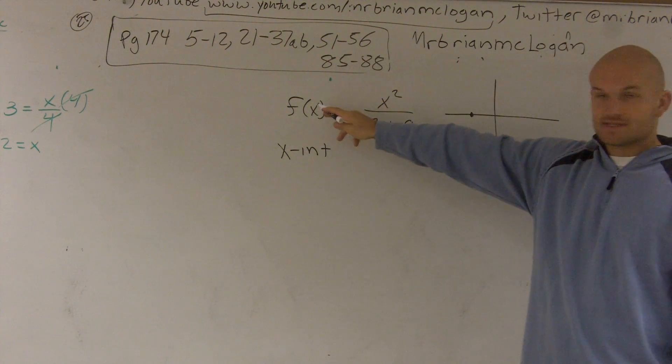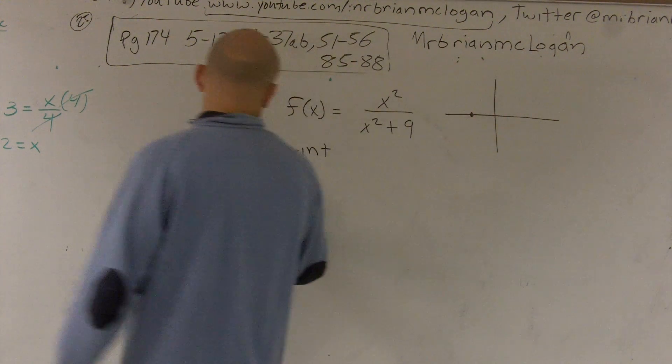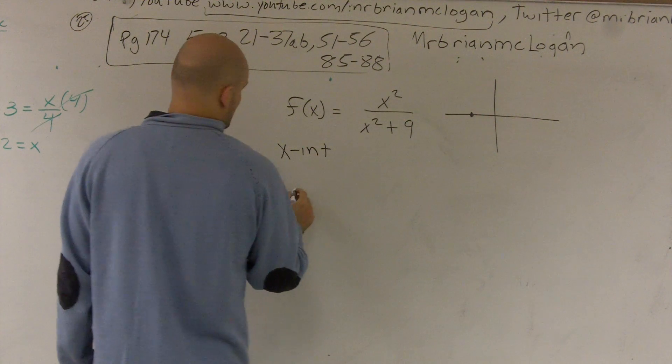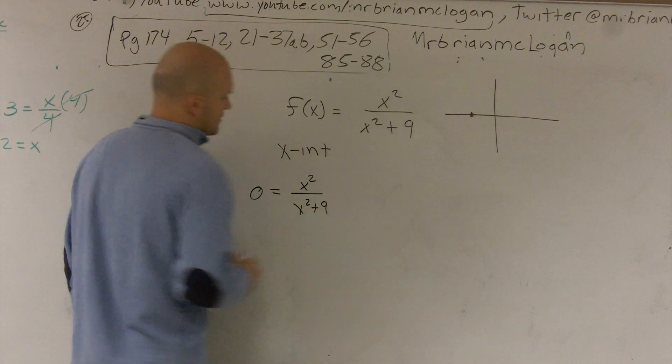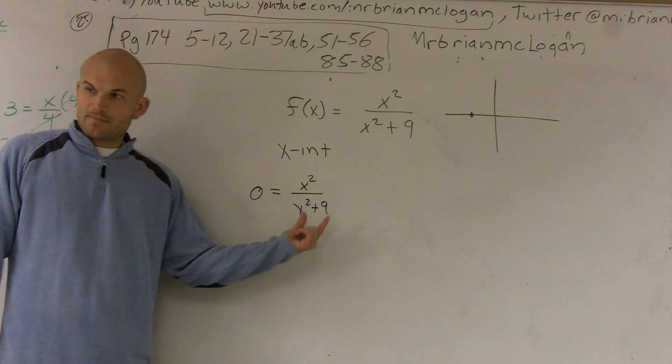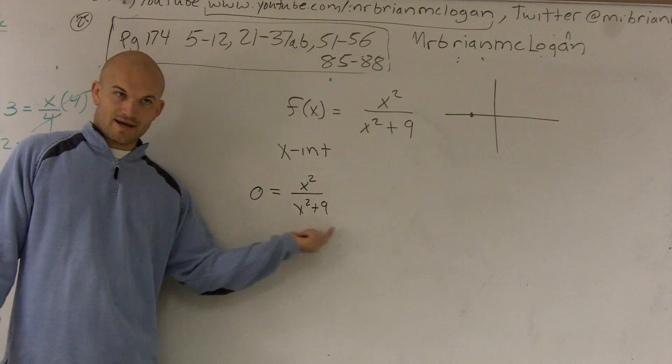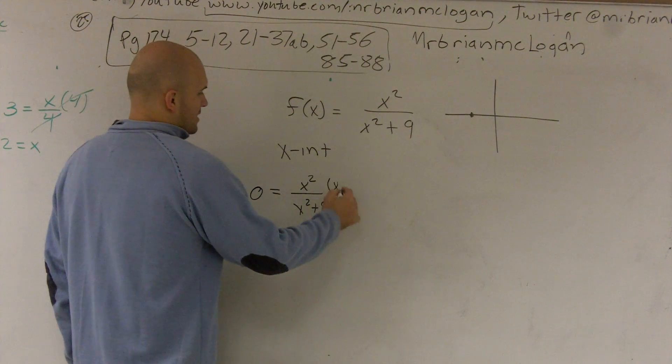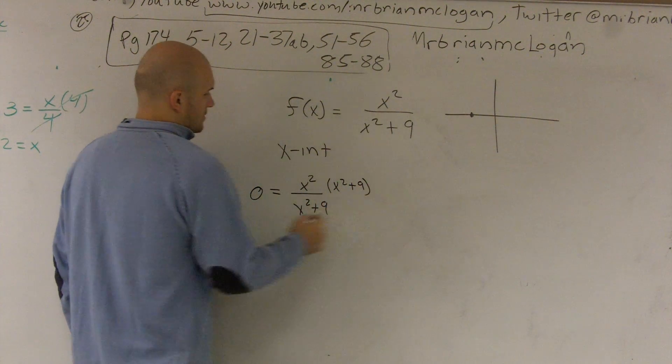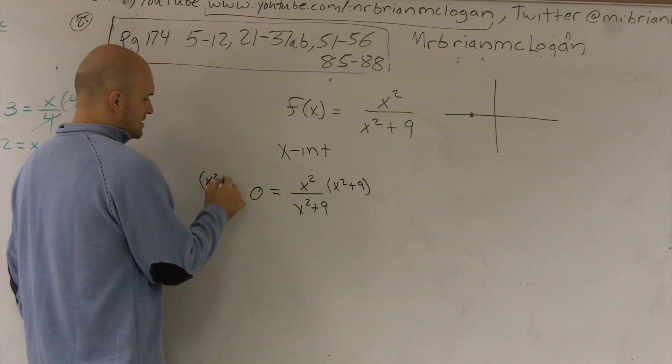That means your output value or your y value is equal to 0. So I plug in 0 in for my f(x). 0 equals x squared over x squared plus 9. Now, since this is on the bottom of my fraction, it's my denominator, to get rid of this, I need to multiply by that number. So I multiply by that number on both sides.